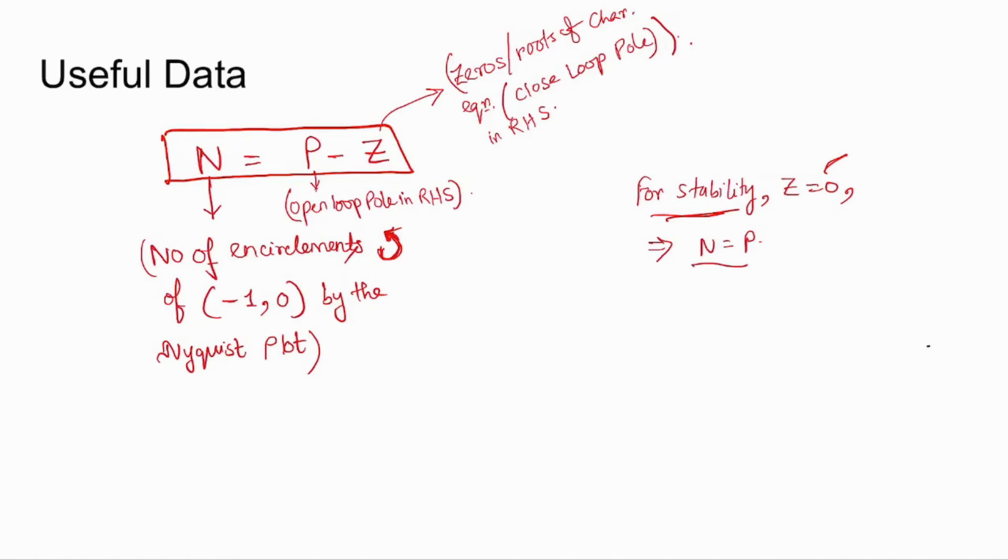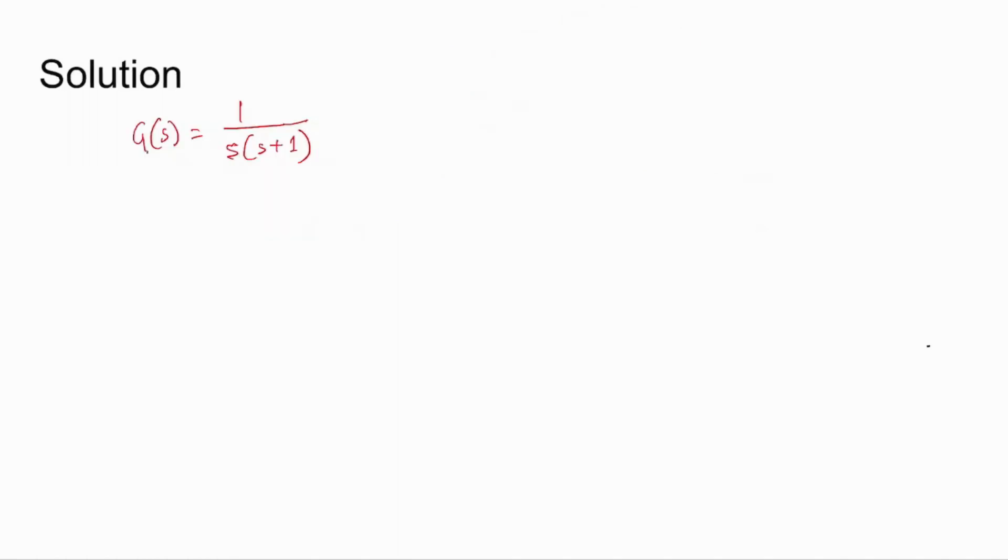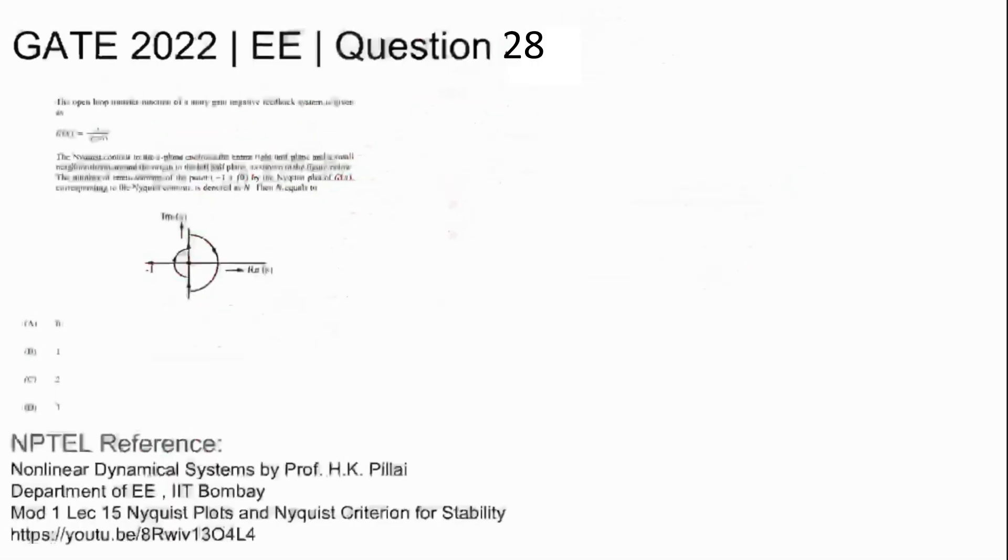Now coming to the solution: the transfer function G(s) is 1 by s into s plus 1. So open loop pole equal to 1, that is equal to P. Z should be equal to 0, that is closed loop poles. Now N should be equal to P minus Z, which is 1 minus 0, so 1. Number of encirclements in the counter-clockwise direction should be 1, so option B is the correct option. Thank you.